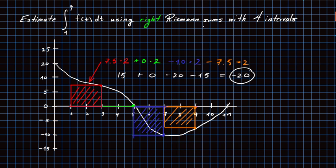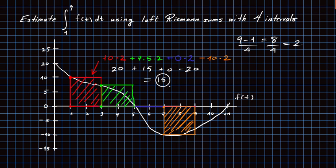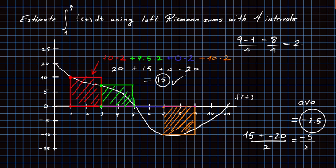To get a better estimate, we can average the two results. Take the right-hand estimate of minus 20 and the left-hand estimate of 15, add them together, and divide by 2: (15 + (−20)) / 2 = −5 / 2 = −2.5. So minus 2.5 is a better estimate than either sum alone.